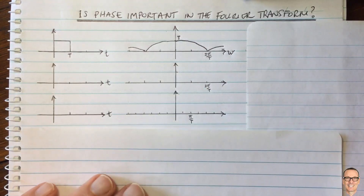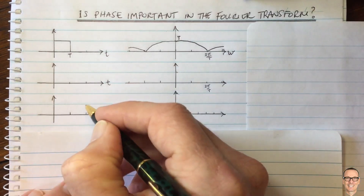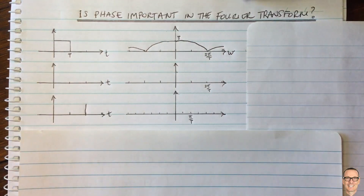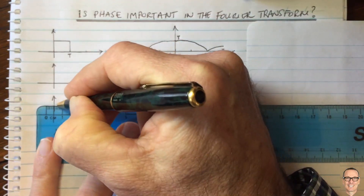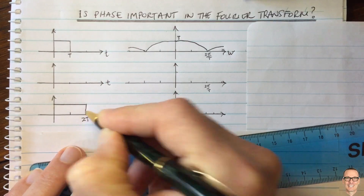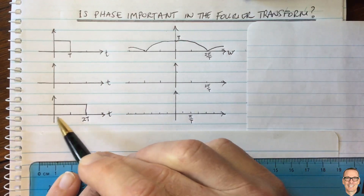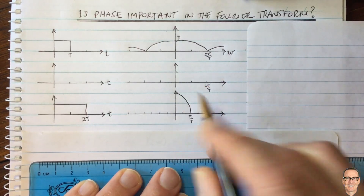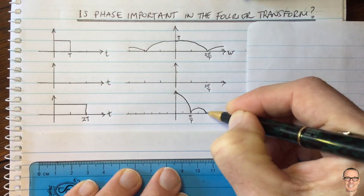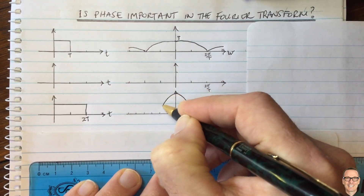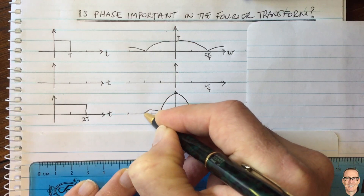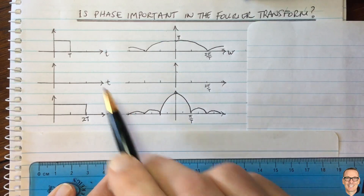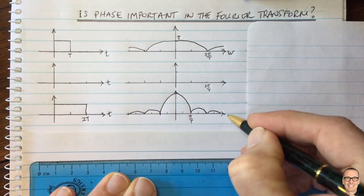Now let's look at another waveform: one which is twice as long — the same square waveform but now twice as long. What happens to that? If this is 2T, then expansion in the time domain gives us compression in the frequency domain, and also an amplitude scaling. So now we've got a sinc function that is half the width. This is well understood and plotted in many textbooks: expansion in time gives compression in frequency.